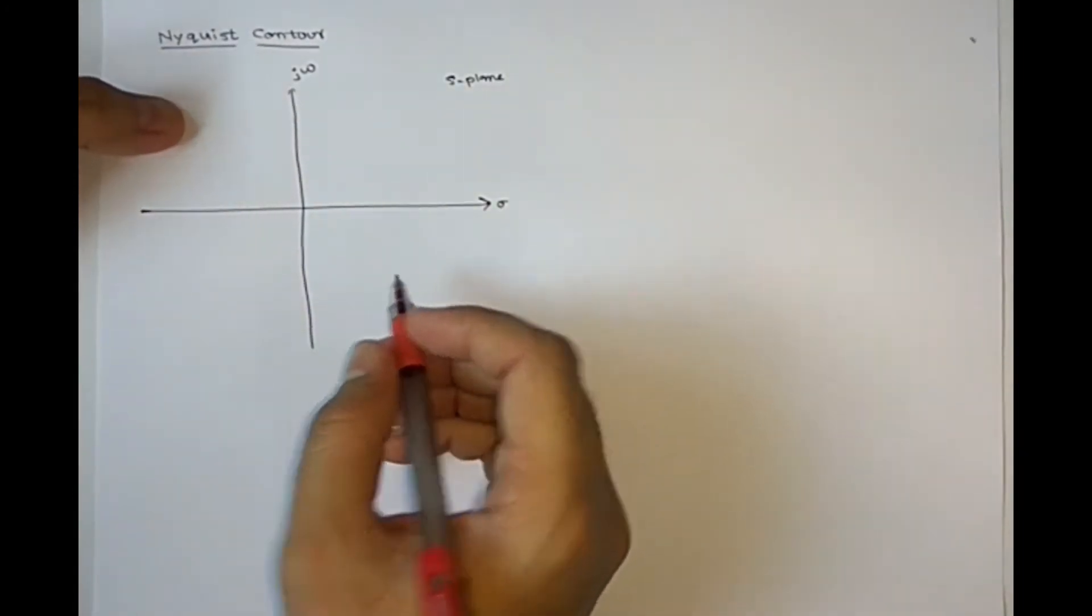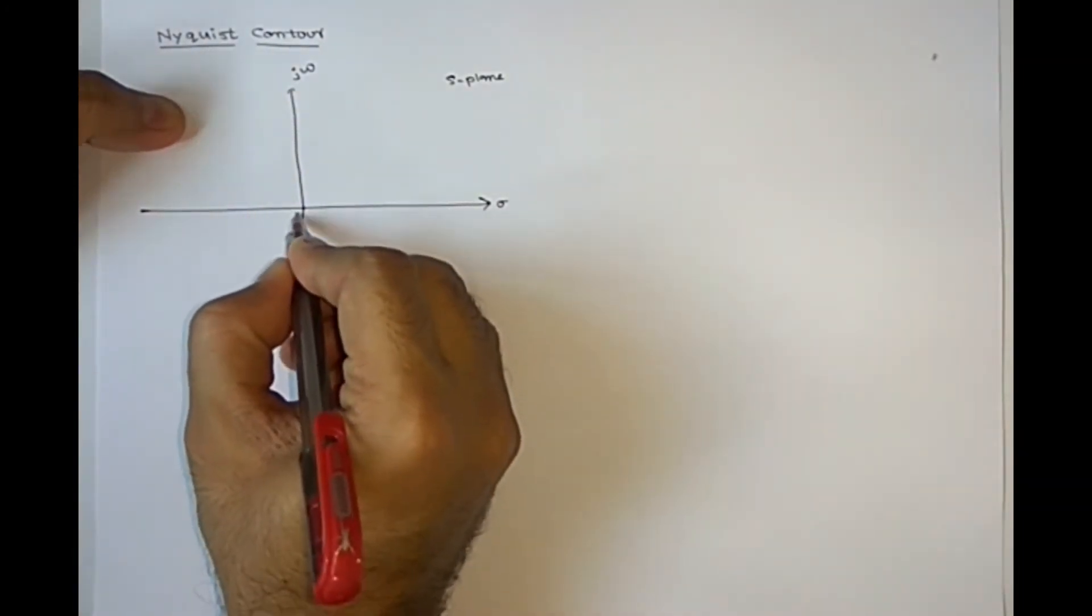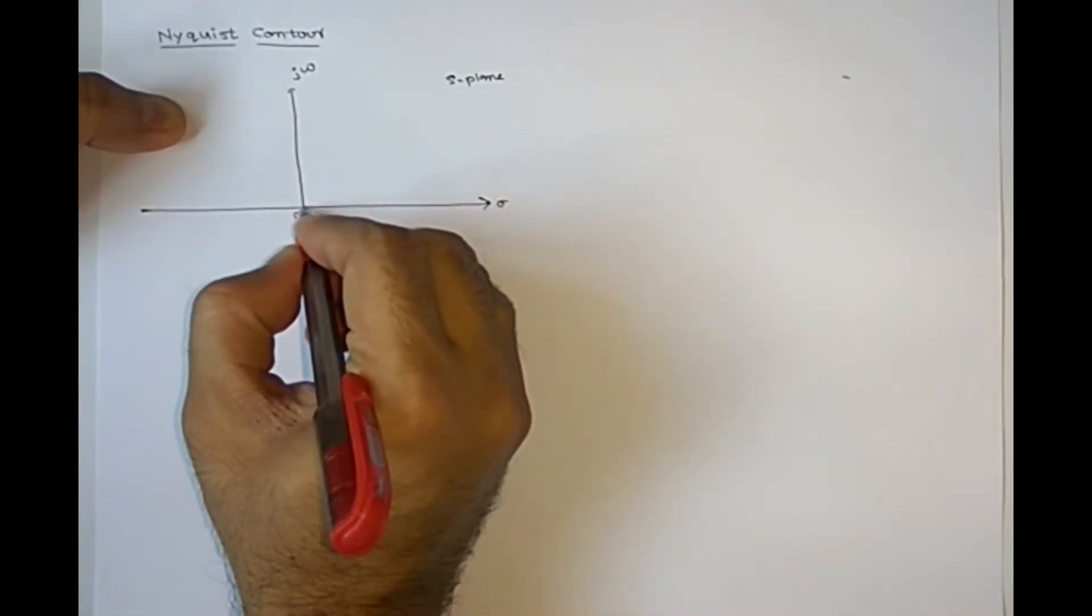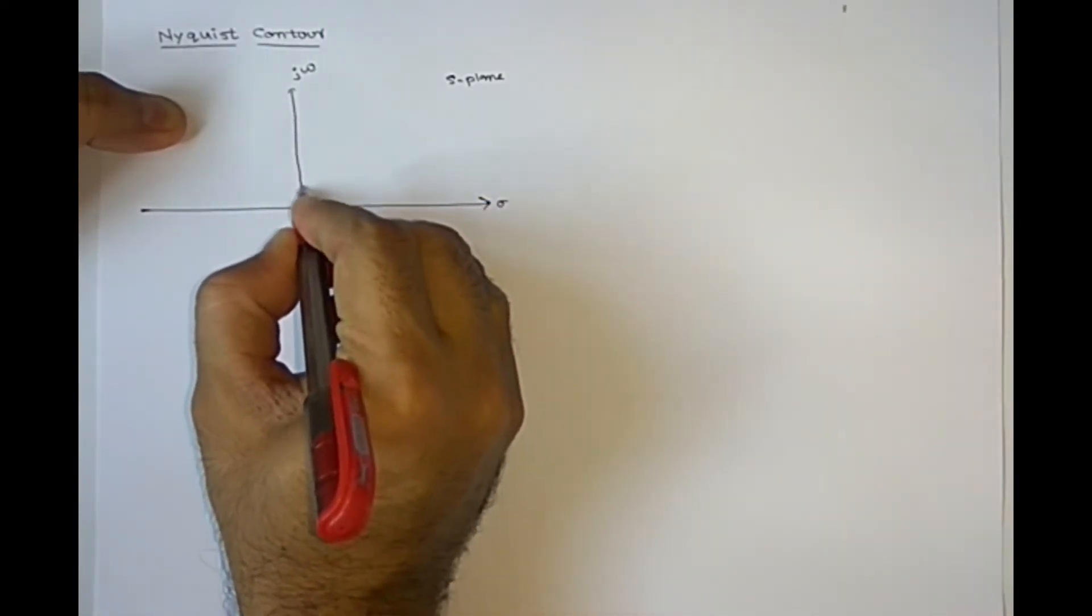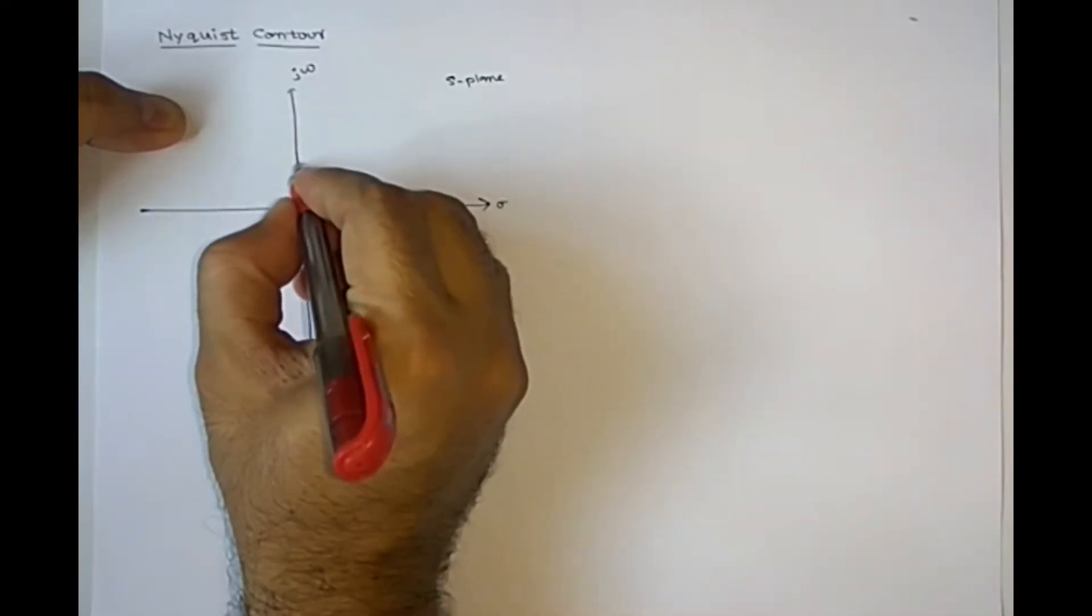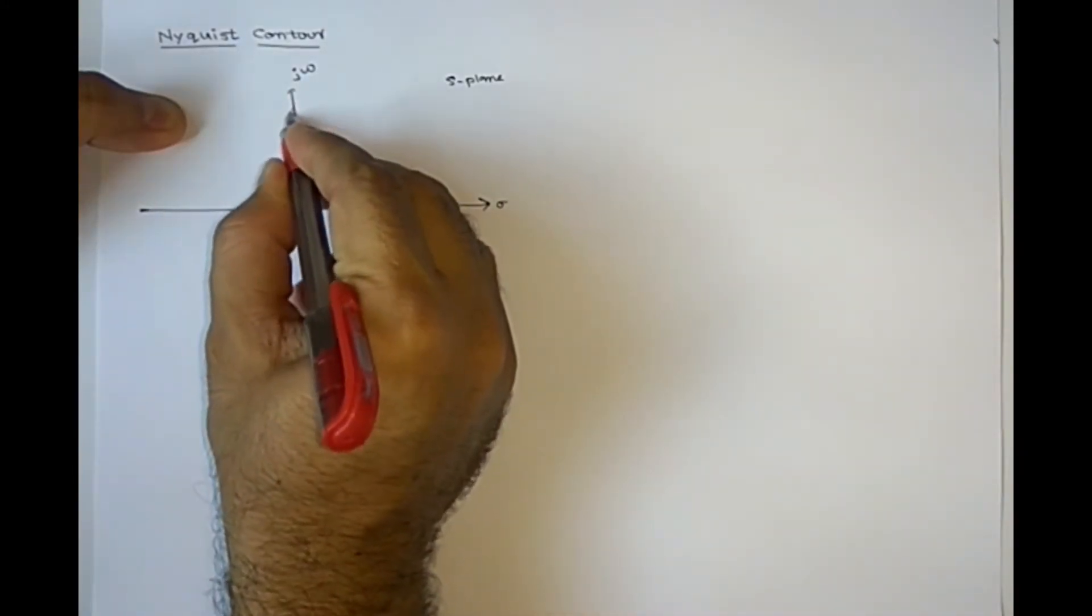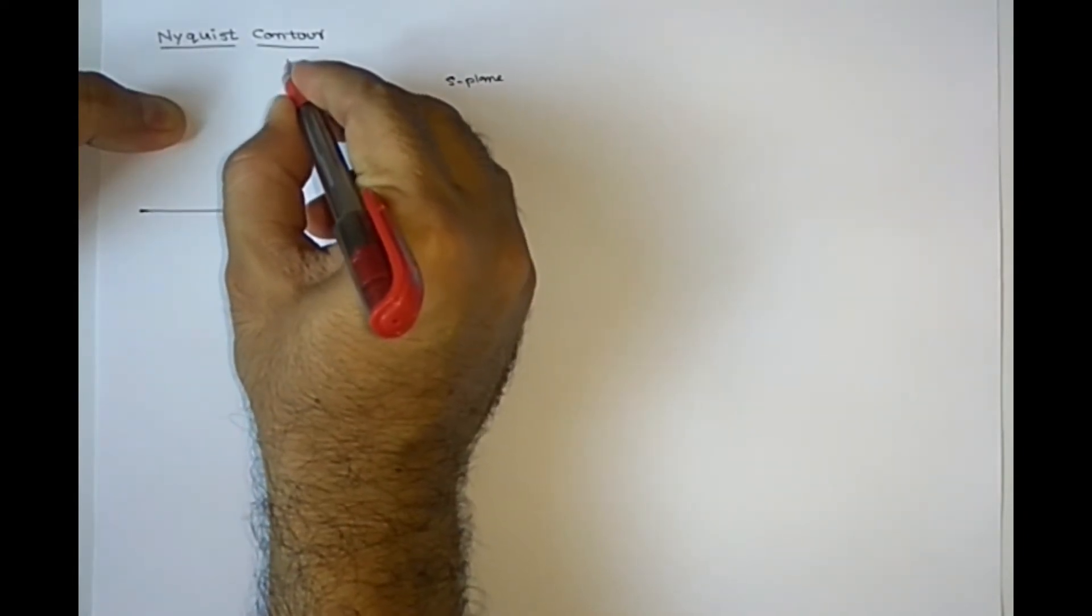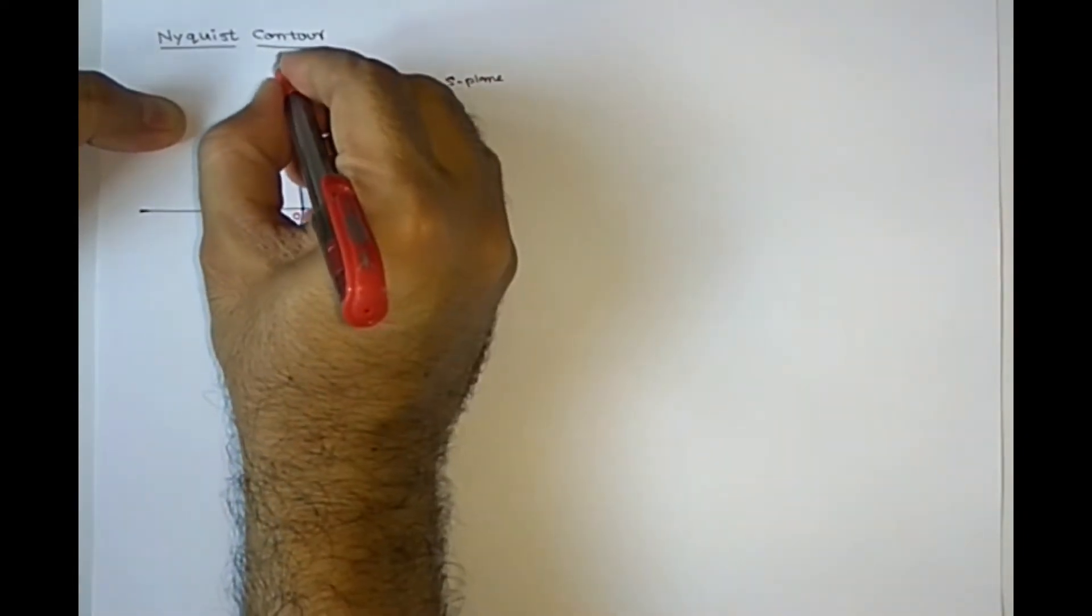So Nyquist contour is, you need to start from zero, origin, and you need to go with imaginary axis, clockwise direction. And you need to reach infinity.